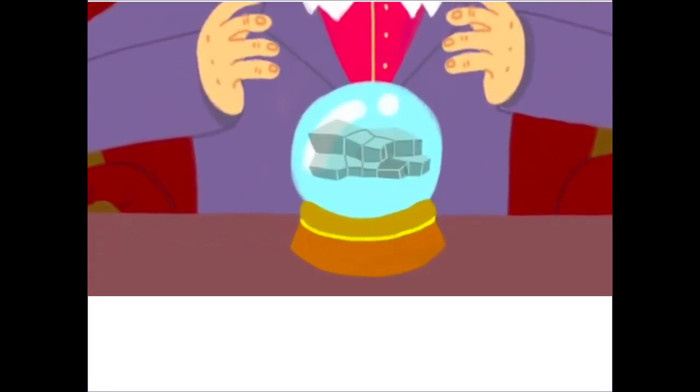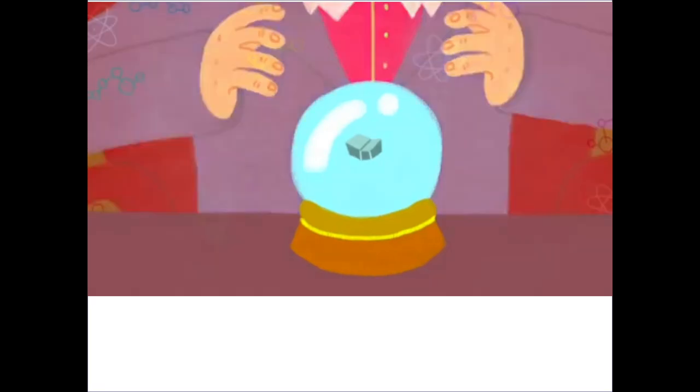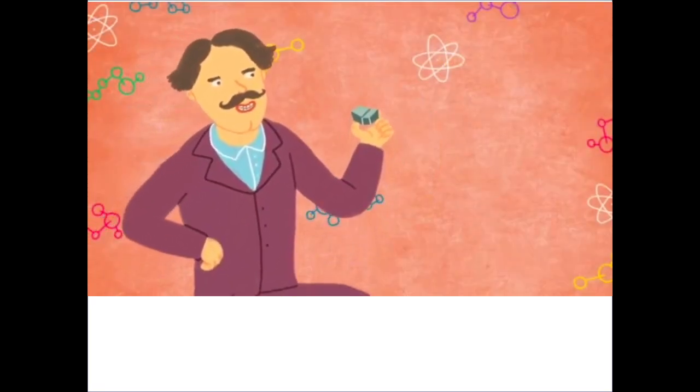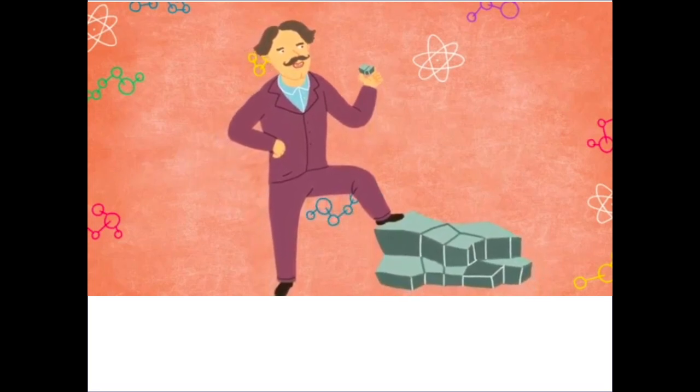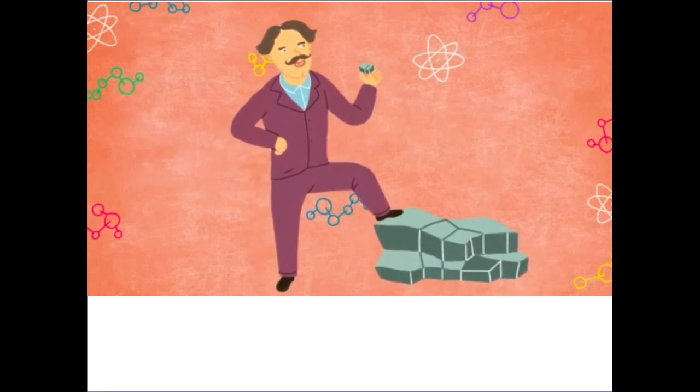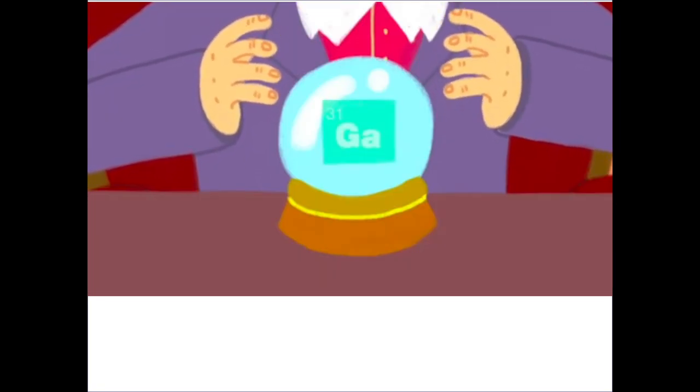Mendeleev could predict all of these things simply from where the blank spot was and his understanding of how the elements surrounding it behaved. A few years after this prediction, a French guy named Paul-Emile Lecoq de Boisbaudran discovered a new element in ore samples and named it gallium after Gaul, the historical name for France. Gallium is one step away from aluminum on the periodic table. It's eka-aluminum.